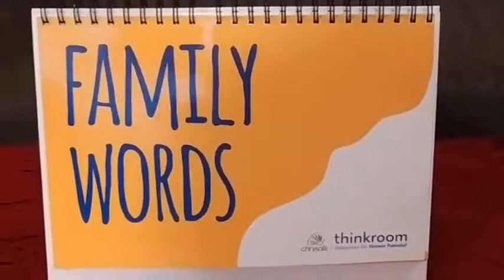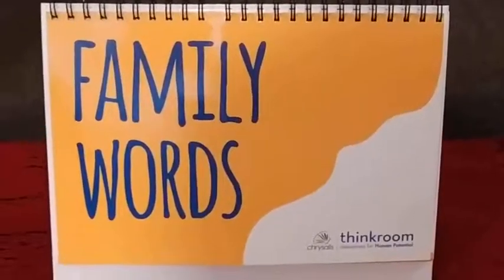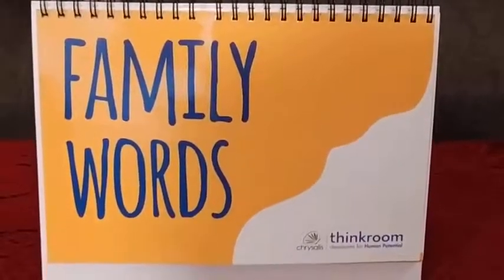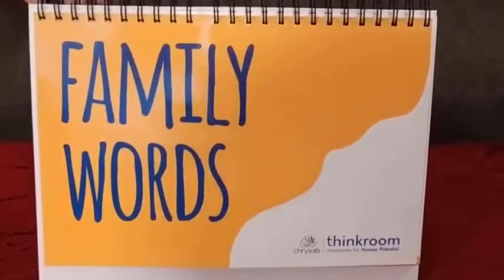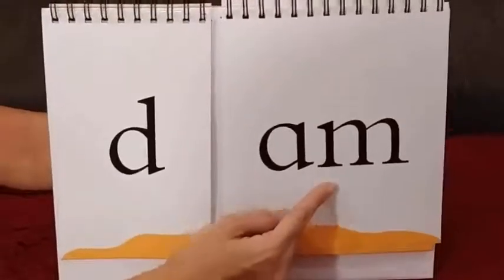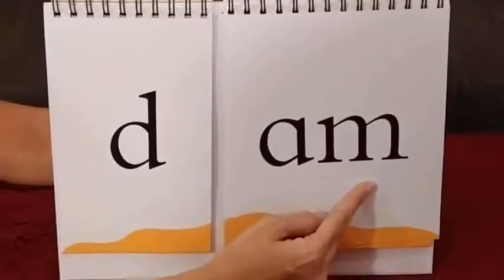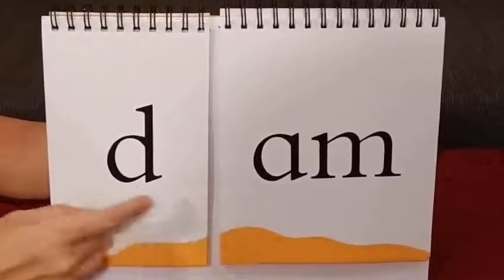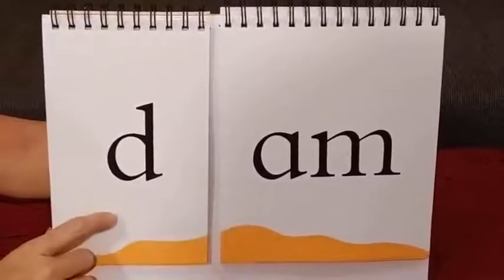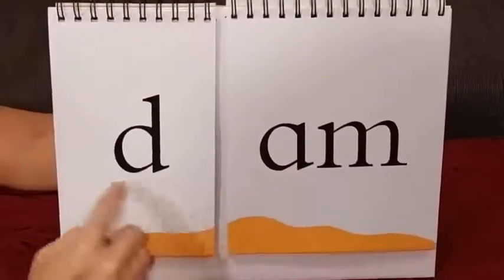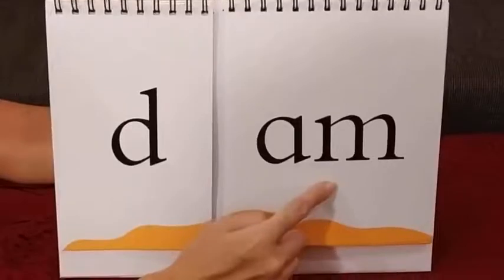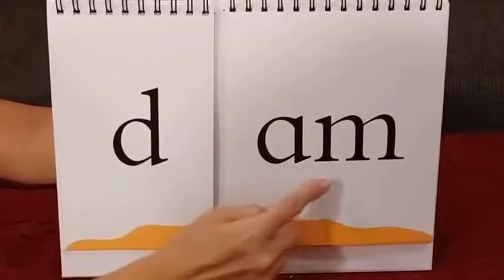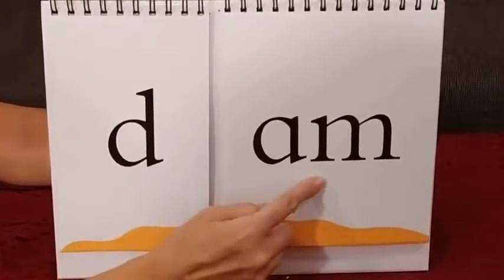Let us read the family words with the help of this family words calendar. The family word is AM. Repeat after me: AM. Now we are going to form a new word: D... AM... Dam. Please repeat after me: D... AM... Dam.